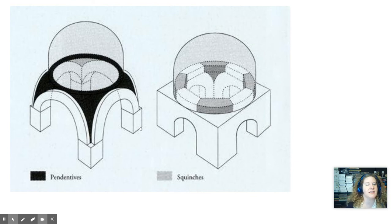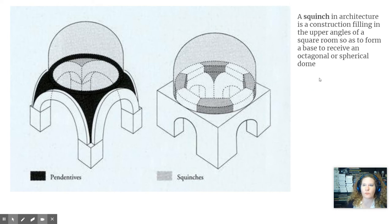So squinch construction that helps, that fills the upper angles of a square room so the round base, or the octagonal base, but in this case the round base of a sphere can rest on it.